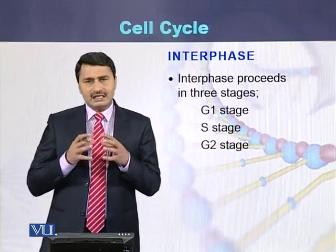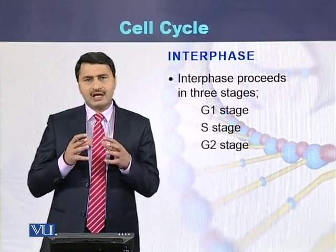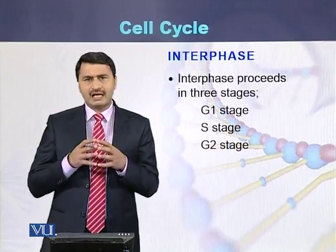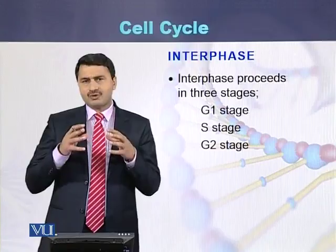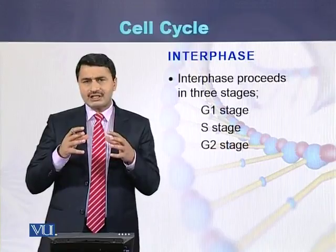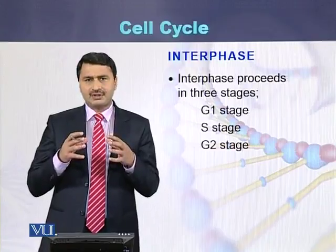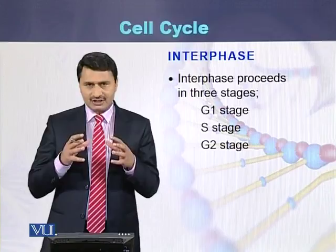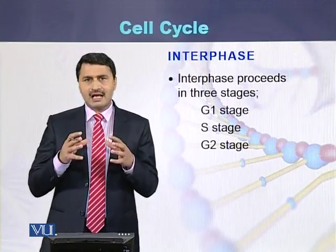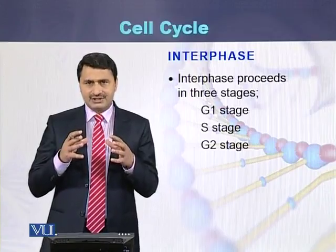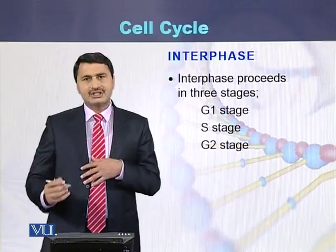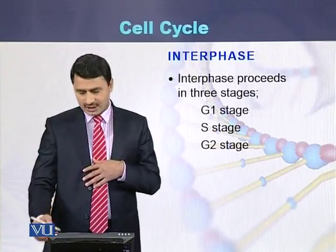Interphase lasts for approximately 90% of the cell cycle time. Interphase proceeds in three steps: the first is called the G1 stage, the second is called the S stage, and the third is called the G2 stage.